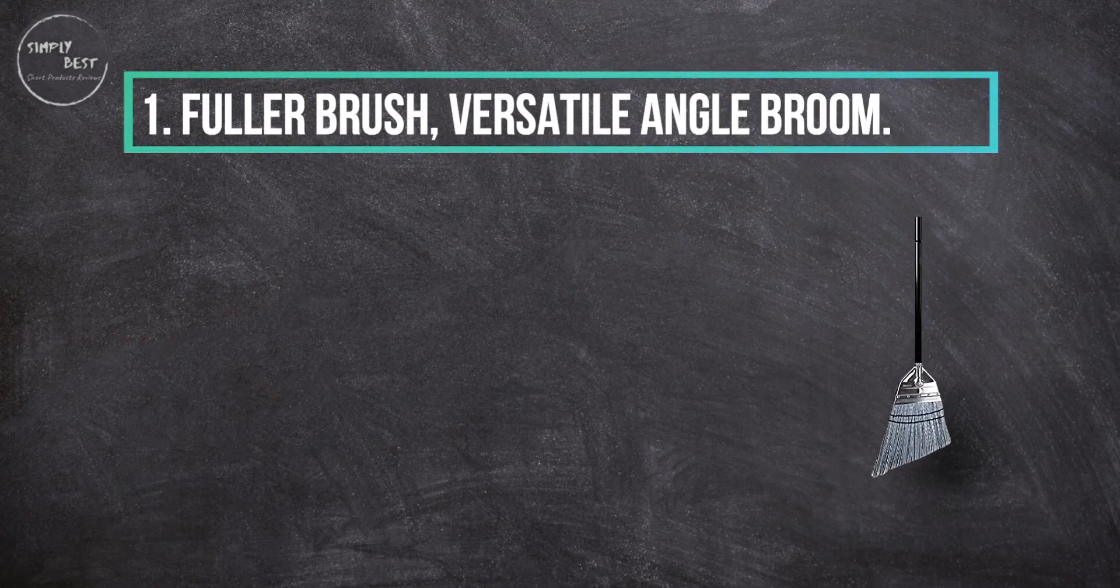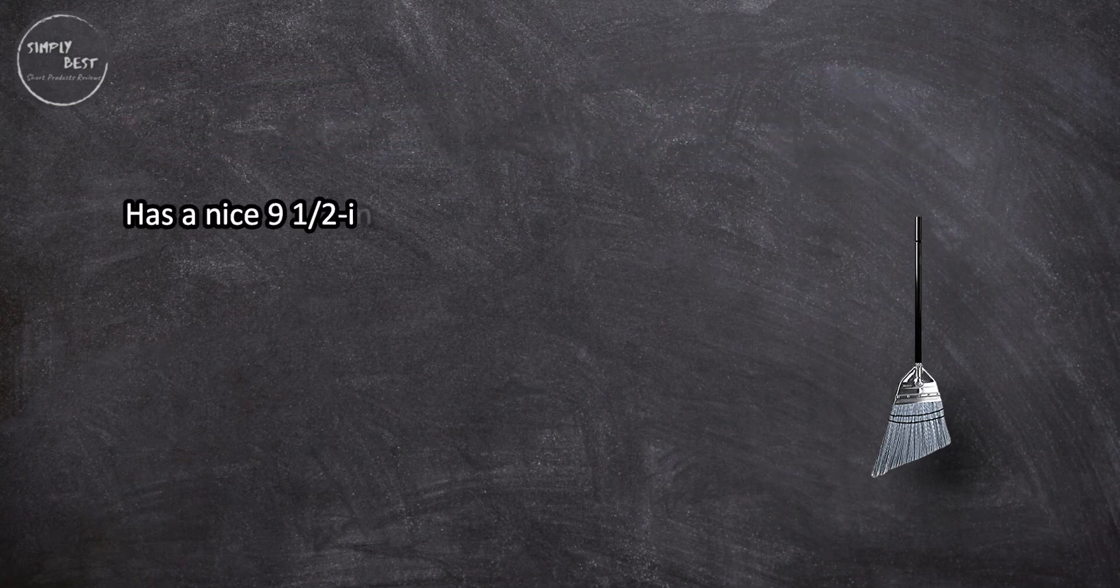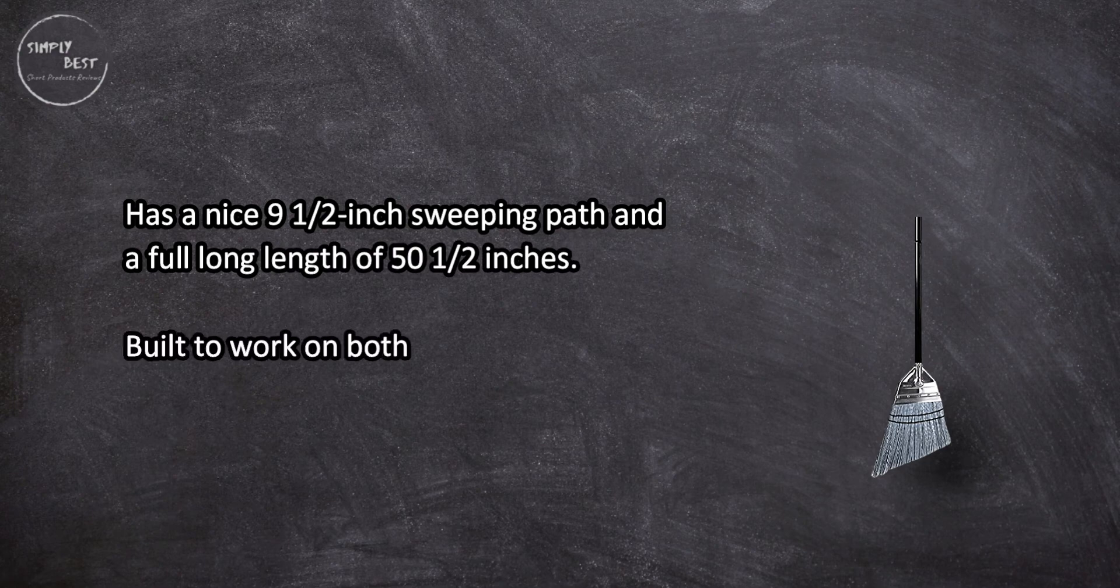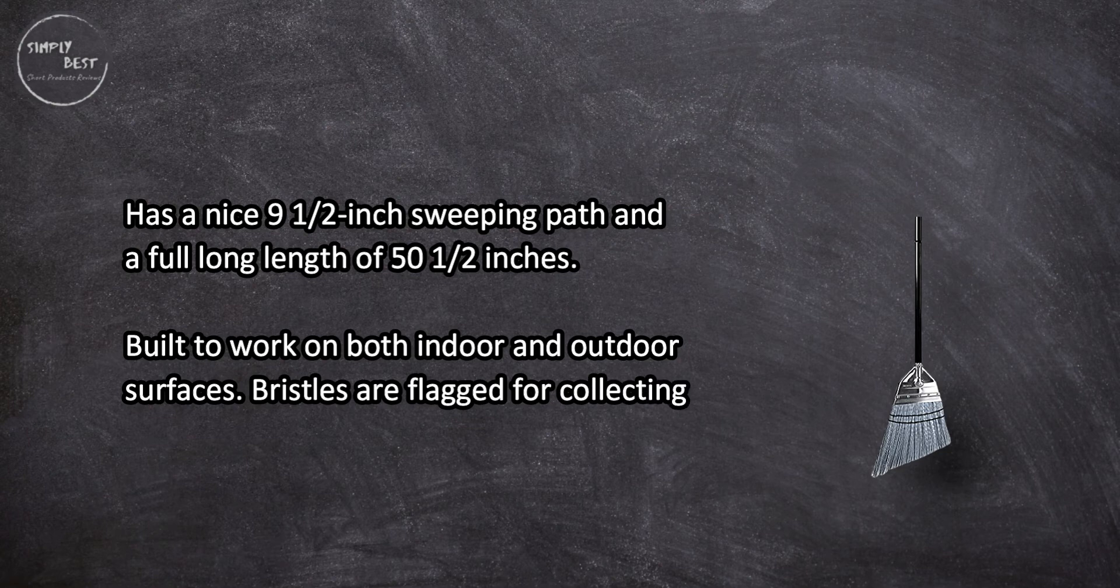At number one, Fuller Brush Versatile Angle Broom. Has a nice nine and a half inch sweeping path and a full long length of 50 and a half inches. Built to work on both indoor and outdoor surfaces. Bristles are flagged for collecting tiny dust particles.